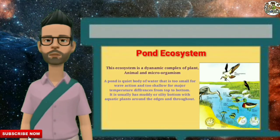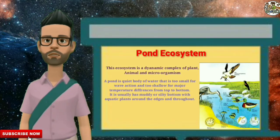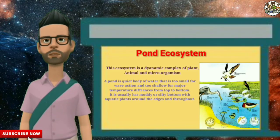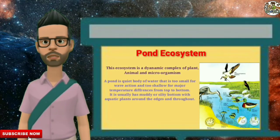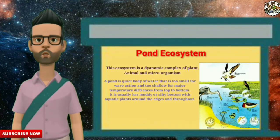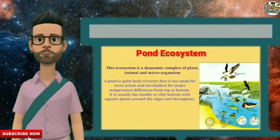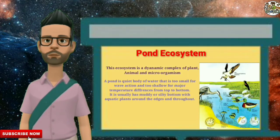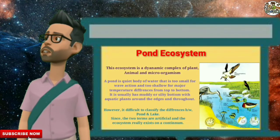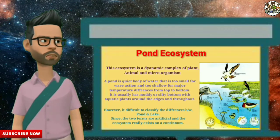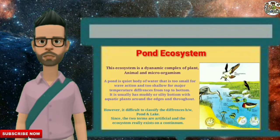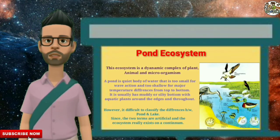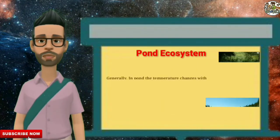A pond is too shallow for major temperature differences from top to bottom. It usually has a muddy or silty bottom with aquatic plants around the edges and throughout. However, it is often difficult to classify the differences between a pond and a lake.